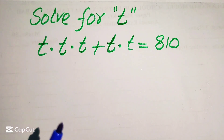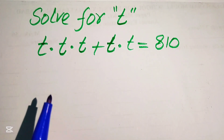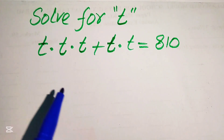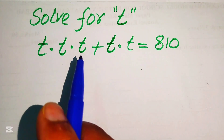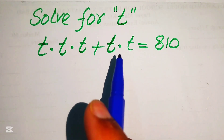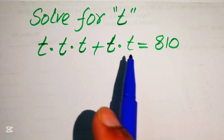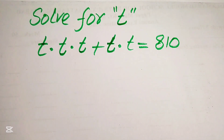Hello everyone, welcome to solve this nice mathematical algebra problem. Here we have t times t times t plus t times t equals to 810, and we solve this problem for the values of t.